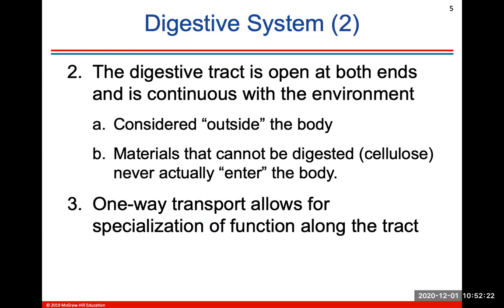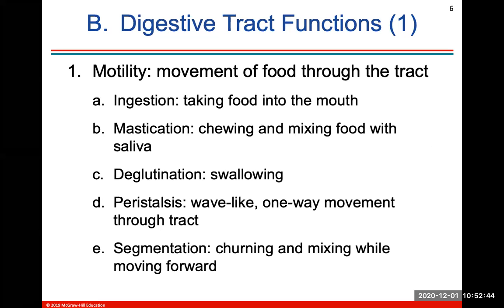The GI tract is open at both ends and continuous with the environment. It's considered outside of the body because it can be entered and exited externally. Materials that cannot be digested, such as cellulose, which is a plant-based material, never actually enter the body — they just travel through the tract. It's a one-way transport, which allows for specialization of function along the tract.